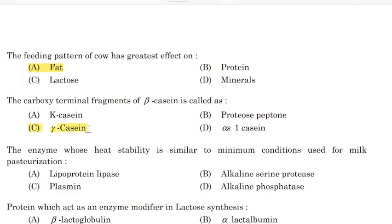Correct answer: Option C — Gamma casein. The enzyme whose heat stability is similar to minimum conditions used for milk pasteurization —